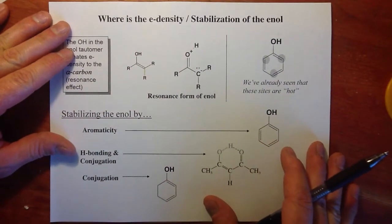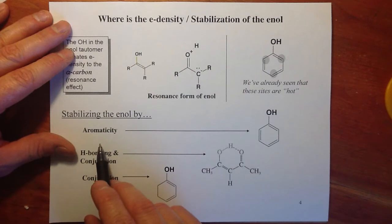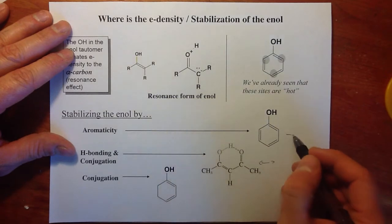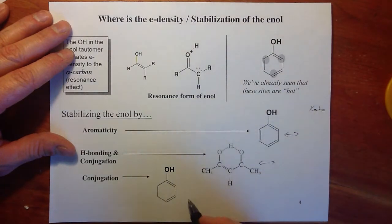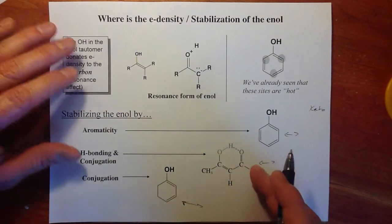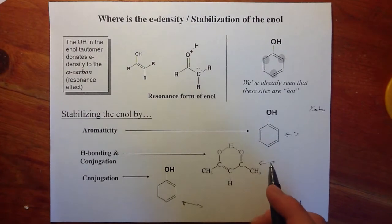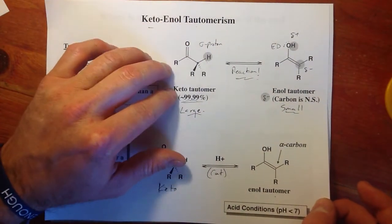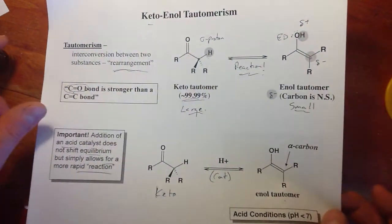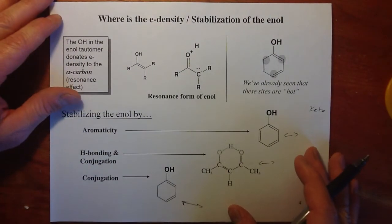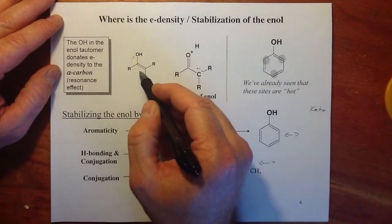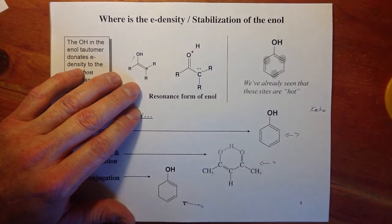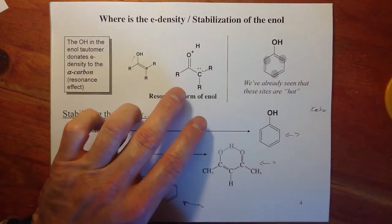Let's look at some conversions between keto and enol forms. We want to be able to take any structure and draw the enol from the keto form — the aldehyde or ketone — or having the enol go the other way. We also want to know why in some cases the rule is broken — that the keto form is more present in solution — and go through some exceptions.